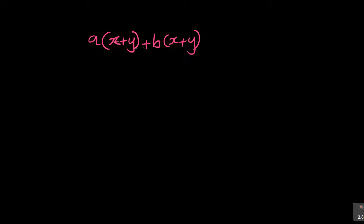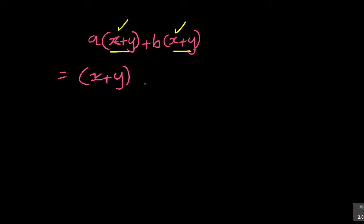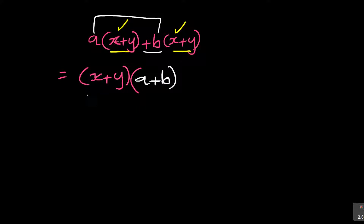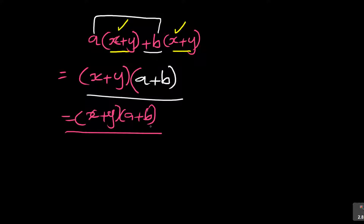When talking about factorization here, one thing first — look at the brackets. Are they the same? X plus Y, X plus Y. That bracket is the same as that bracket. That's the first thing to notice. So you write what is common — that bracket is common, you don't have to write it twice. You write it once, then you open another bracket and write what is outside: A and plus B. So the answer is X plus Y, times A plus B.